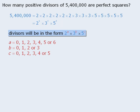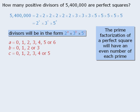Now this information will only help us determine the total number of divisors of 5.4 million. We want to know how many of those divisors are perfect squares. To do this, we will use the fact that the prime factorization of a perfect square will have an even number of each prime number. This means that if a divisor of 5.4 million is a perfect square, then it must have an even number of 2s, an even number of 3s, and an even number of 5s in its prime factorization.